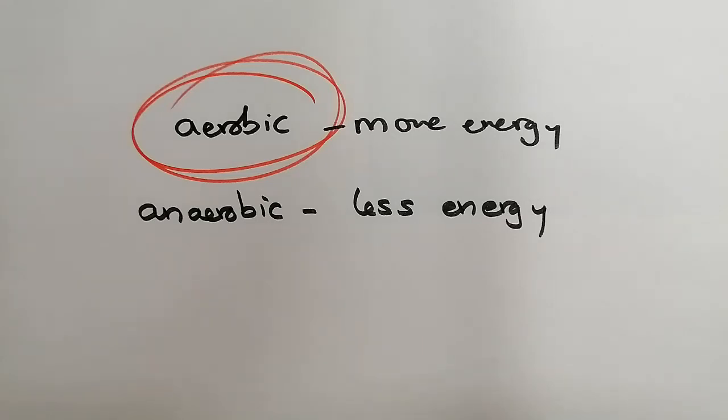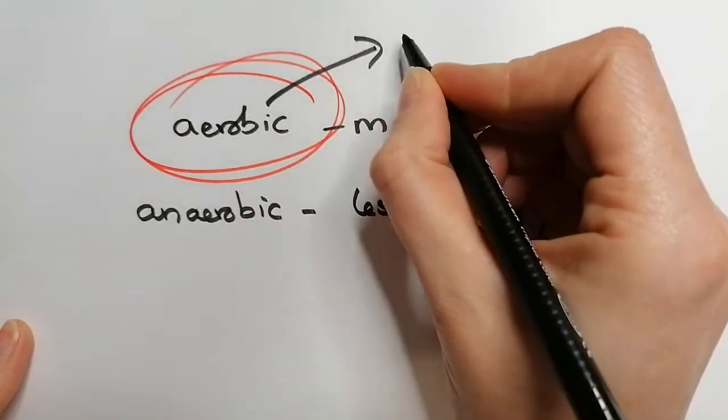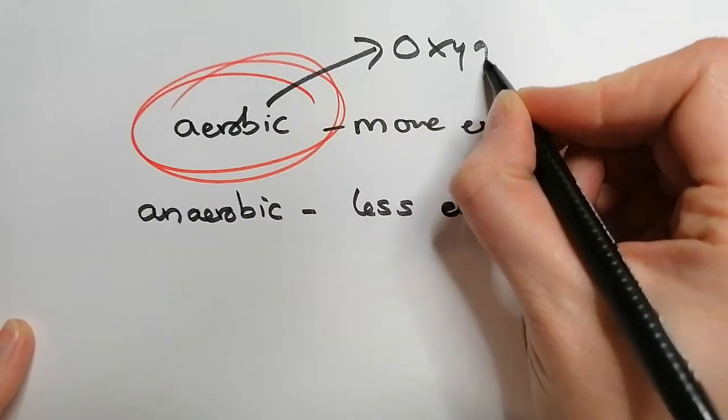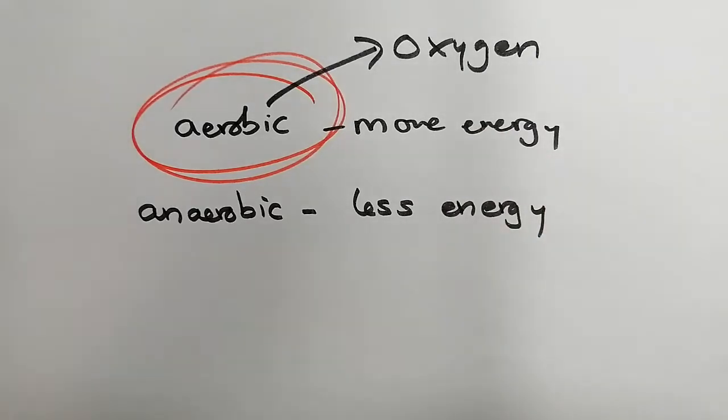So now we need to look at why one is different to the other. Aerobic means that it has got lots of oxygen, so that glucose is being broken down in the presence of oxygen. Anaerobic means when there is no oxygen.